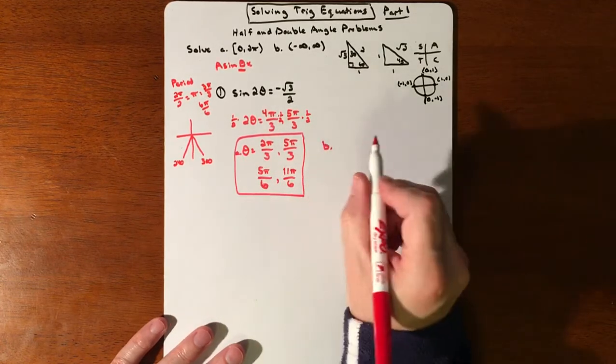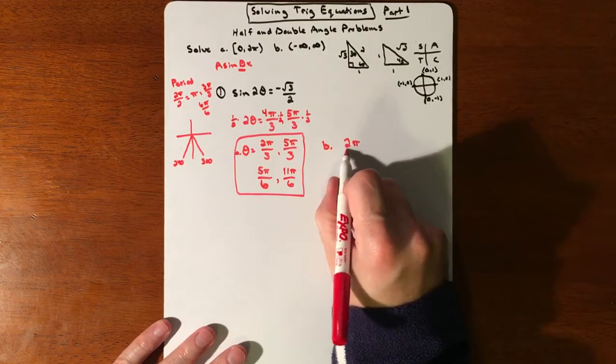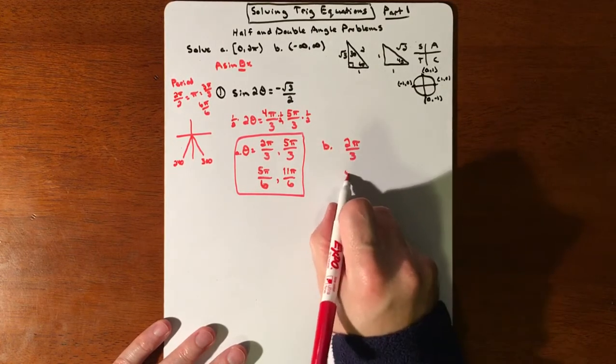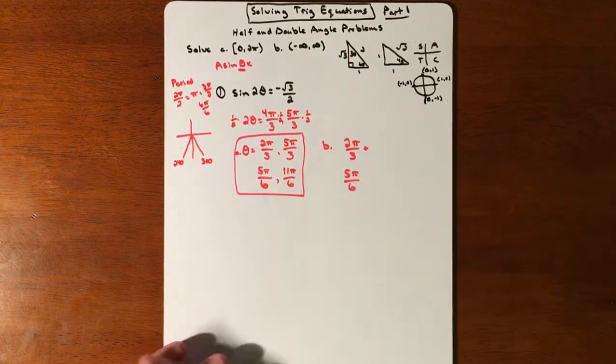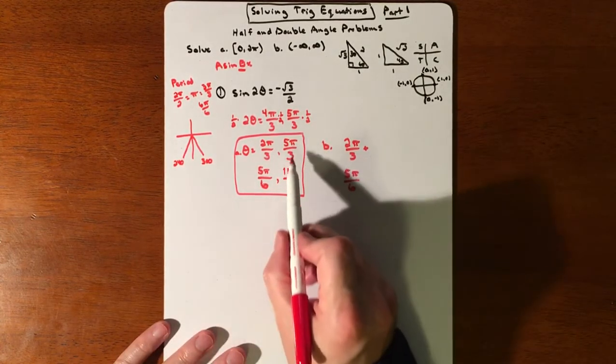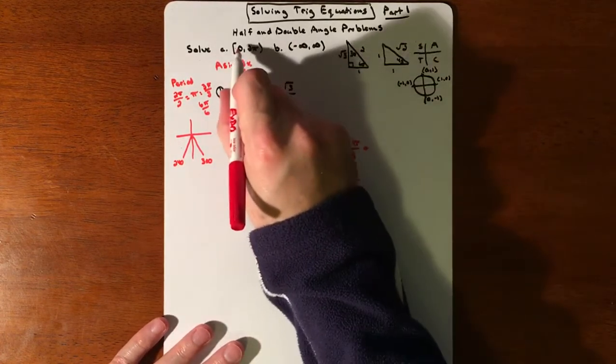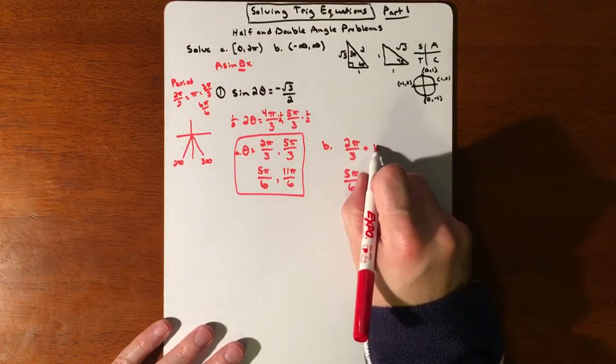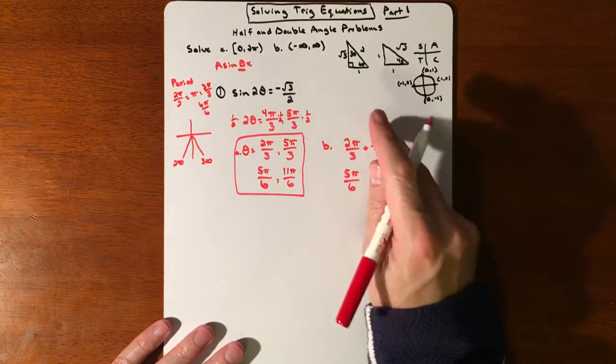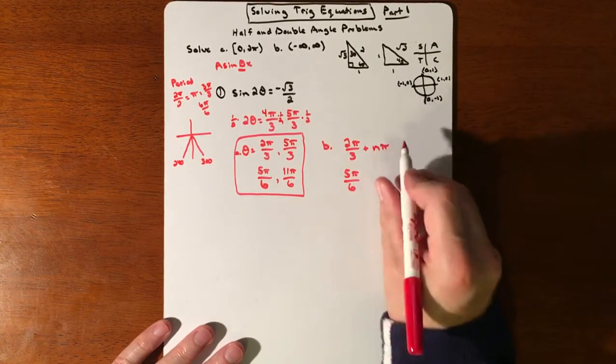Part B to this would be, we take our original answers, 2π/3 and 5π/6, and we account for the infinite amount of coterminal angles. So we each did one coterminal angle to tack onto these. So this is locking us between 0 and 2π. If we don't have that, then we're just going to add n number of periods.